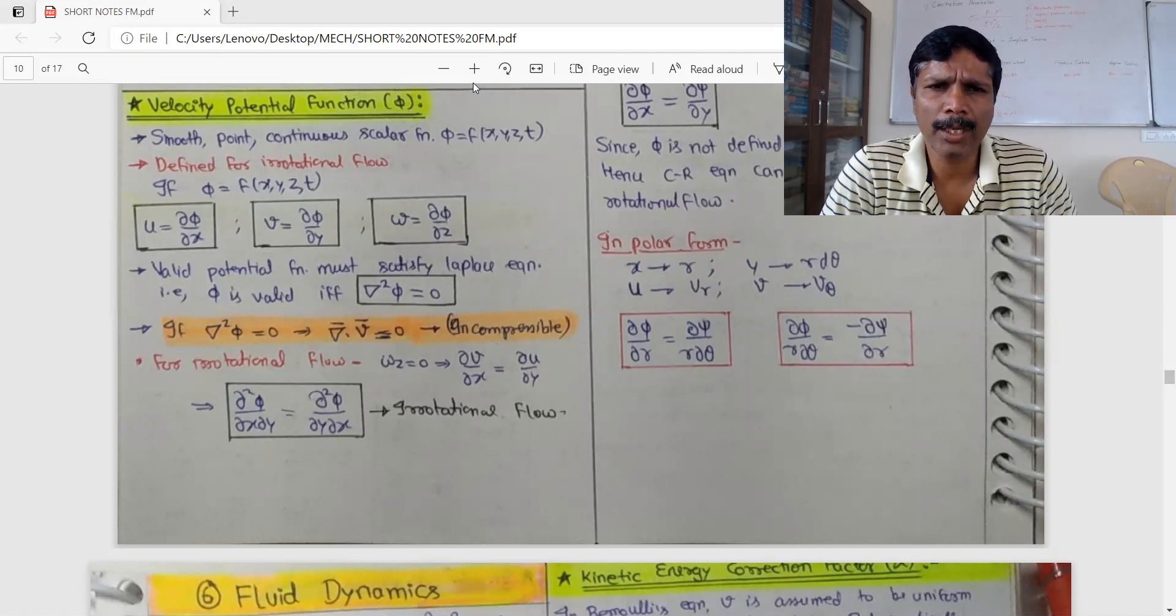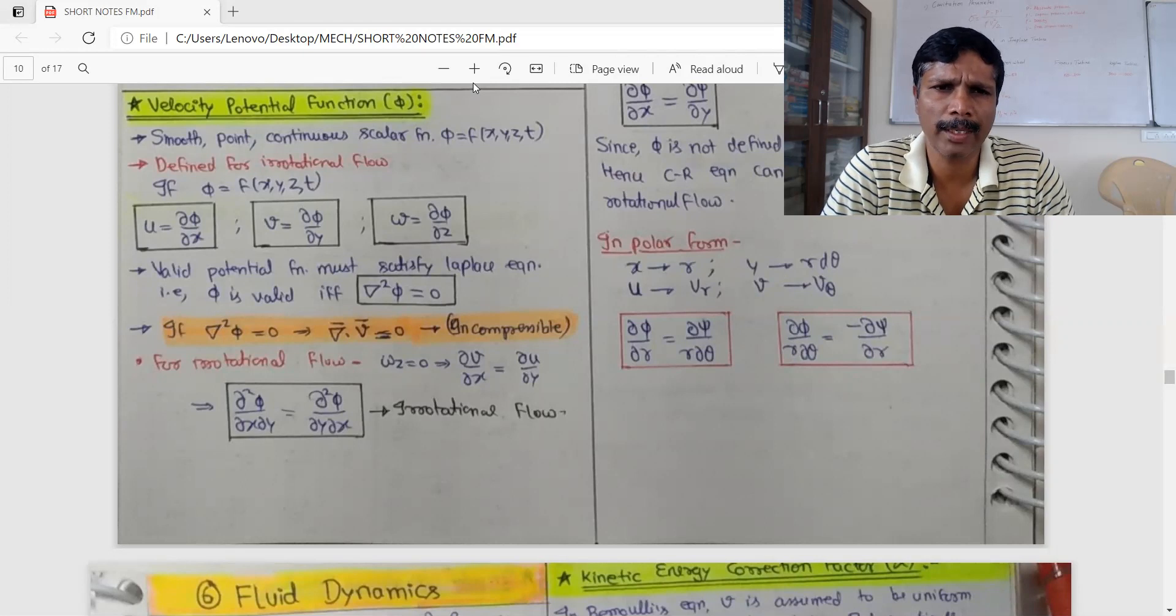The velocity potential function must satisfy the Laplace equation. Laplace equation is del square phi equal to 0. If del square phi equal to 0, then del dot v vector equal to 0 is incompressible.